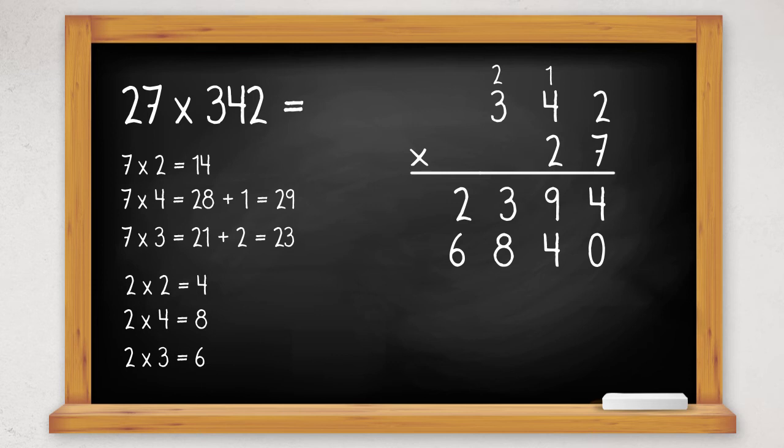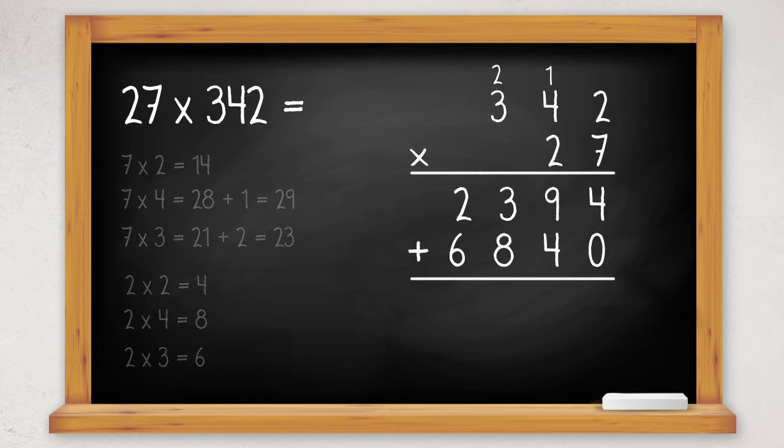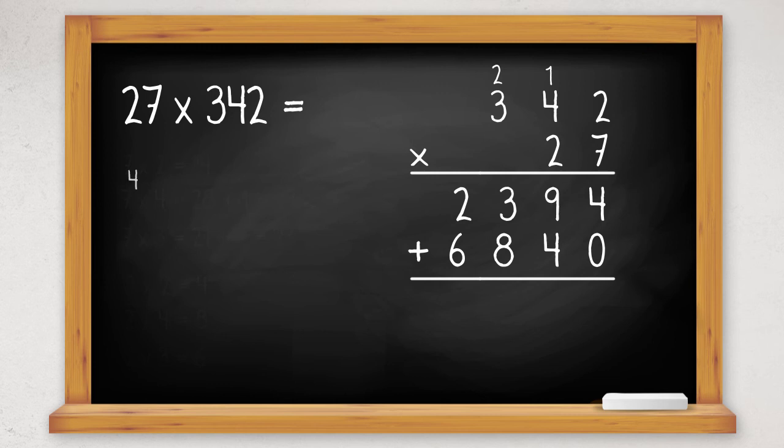Now we just need to add up our answer to get the final answer. The numbers are already in the right column, so it's just a case of adding them up. 4 plus 0 is 4, 9 plus 4 is 13, so 3 down and carry the 1. You can carry at the bottom now if you like.